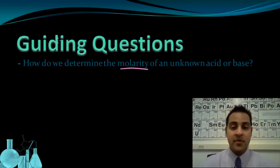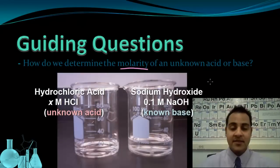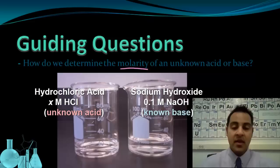So in this video, we're going to be titrating an unknown acid. So here's an unknown acid of HCl. We don't know the concentration. And we're going to be using a known base. So we're using sodium hydroxide 0.1 molar. So in general, for a titration,